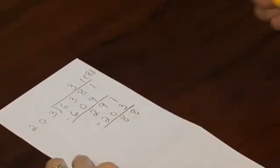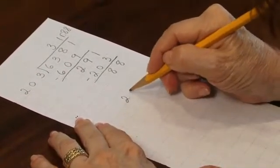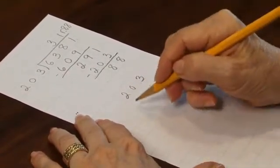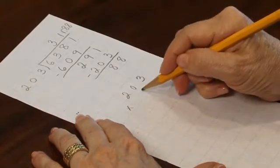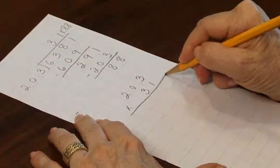I can check the problem by taking the divisor, 203, and multiplying it by the quotient, 31.